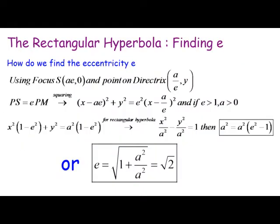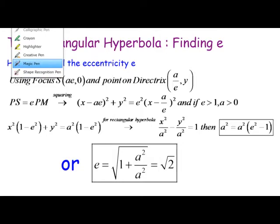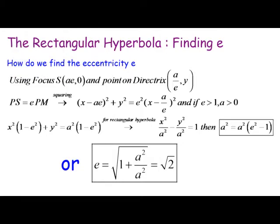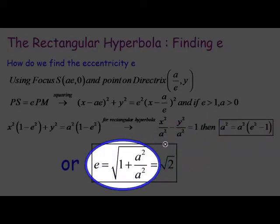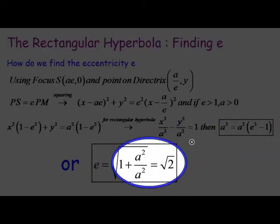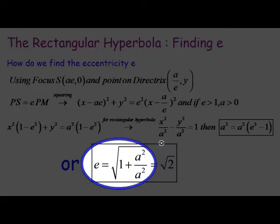If you go through and square the normal ps equals e·pm, you'll be able to derive that the eccentricity e — since a equals b, you can see here — gives this expression, and basically this will give us that e equals root 2, because a squared equals b squared.